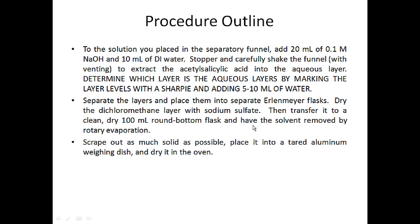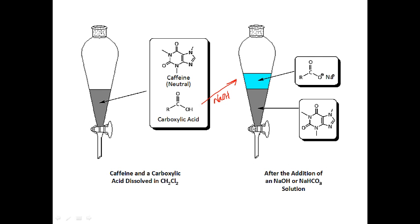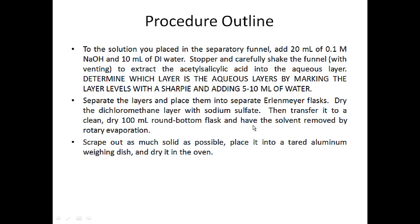Once you've identified the aqueous and organic layers, separate them by draining the lower layer into one Erlenmeyer flask and the top layer into a second. Take the organic layer, dry it with sodium sulfate, transfer to a clean dry 100 mL round-bottom flask, and rotary evaporate off the solvent. After rotary evaporation you'll have caffeine — scrape out as much solid as possible from the round-bottom flask, place in a tared aluminum weighing dish labeled with your name and compound, and dry in the oven.